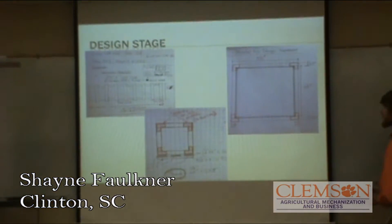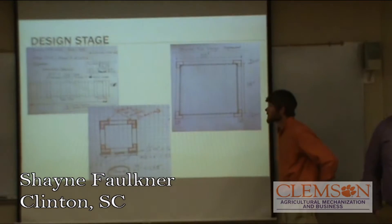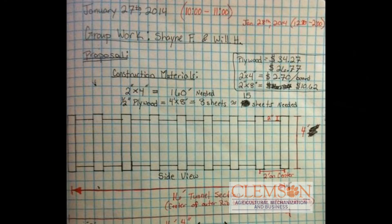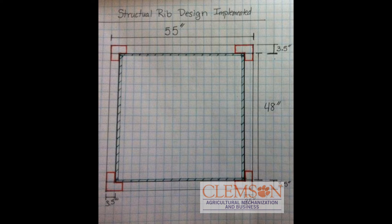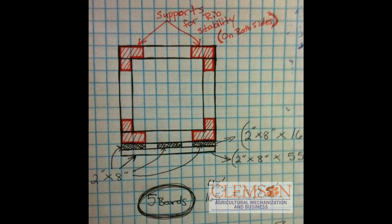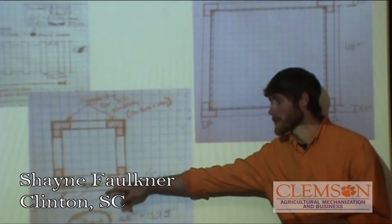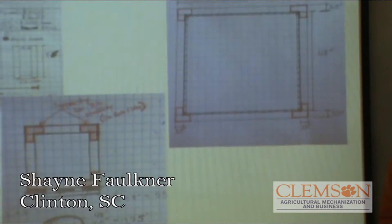This is the design stage when we were originally presented the problem. The top left picture shows setting the structural ribs at two feet on center. We set the tunnel body at 16 feet long. This shows the face of one of the ribs. The red L-shapes or gussets are for support of the rib. The middle picture was our first design of a framing system, which we altered a little bit.